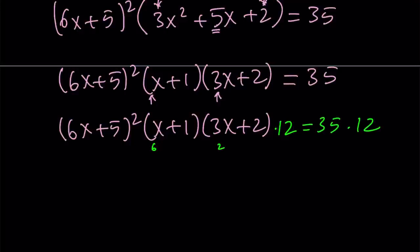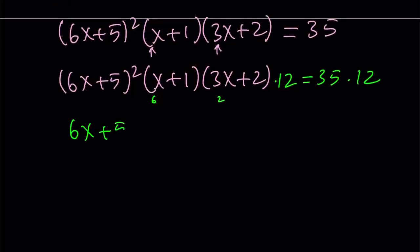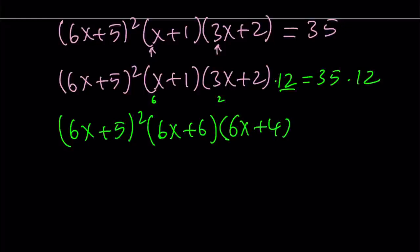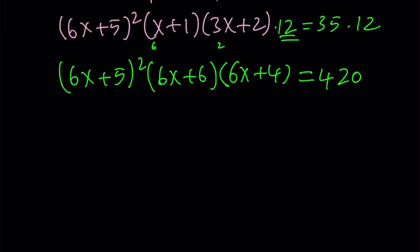Now, let's see how we can proceed. I'm going to multiply. Obviously, 6 times 2 is 12. So I can multiply x plus 1 by 6 to get 6x plus 6. And I can multiply 3x plus 2 by 2 to get 6x plus 4. That is equivalent to multiplying by 12. And on the right-hand side, 35 times 12 is the same as 70 times 6, which is 420.